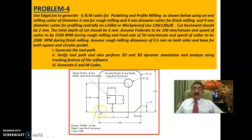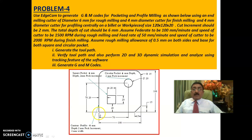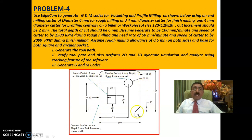The problem has a circular profile here, a chamfer, and a contour profile with 6mm depth and 2mm peck increment. That means the profile moves along three times: first 2mm, then another 2mm (total 4mm), then another 2mm, totalling 6mm. The cutter diameter is 4mm.